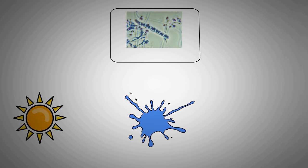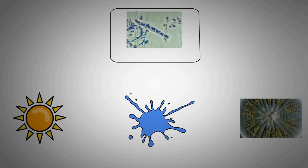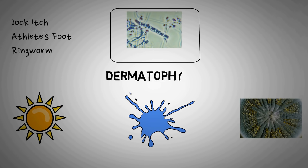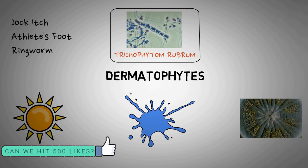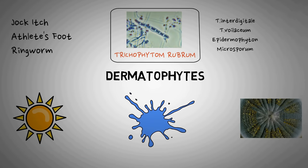Fungal nail infections occur from the overgrowth of fungi in, under, or on the nail. Fungi thrive in warm, moist environments, which can cause them to naturally overpopulate. The same fungi that cause jock itch, athlete's foot, and ringworm can cause nail infections. These belong to a group known as dermatophytes. Trichophyton rubrum is the most common dermatophyte involved in onychomycosis. Others include Trichophyton interdigitale, Epidermophyton, Trichophyton violaceum, and Microsporum.